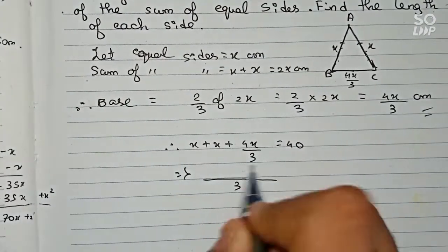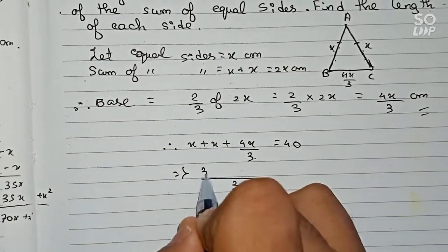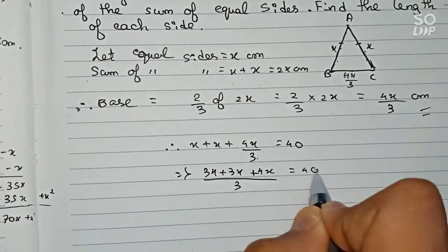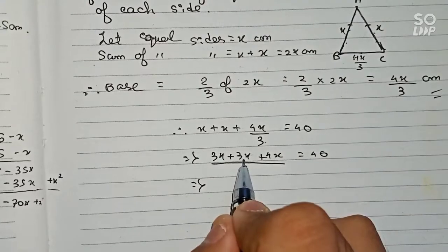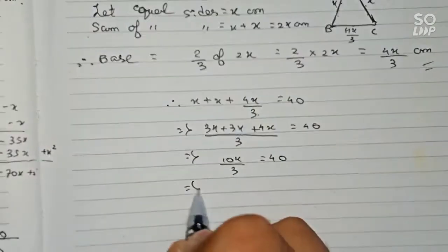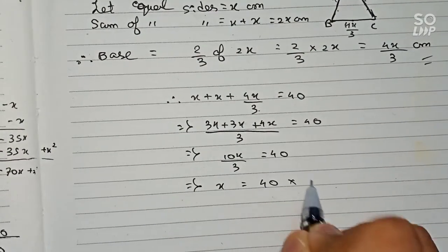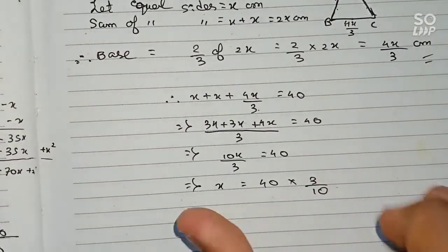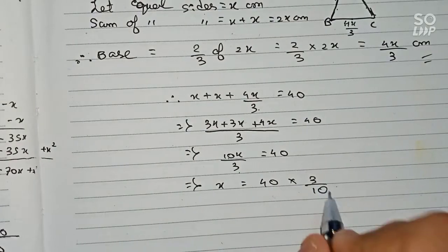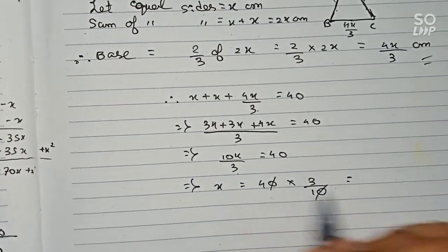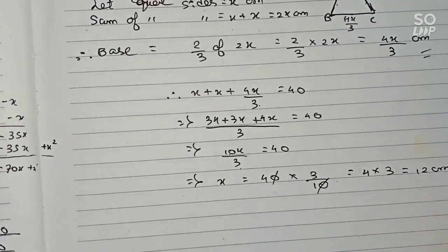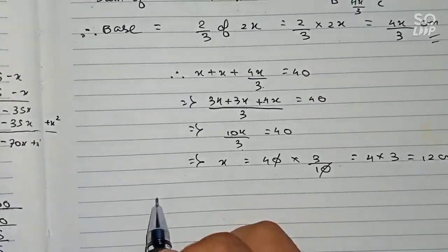Taking 3 as the LCM: 3x plus 3x plus 4x equals 40, giving 10x/3 equals 40. So x equals 40 multiplied by 3/10. The zeros cancel, and 4 into 3 equals 12, so x equals 12 centimeters.